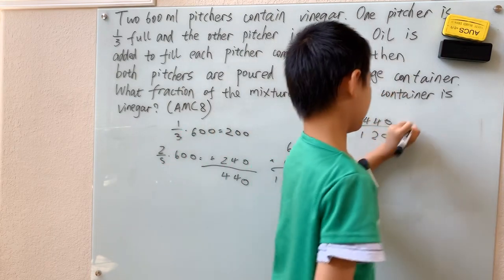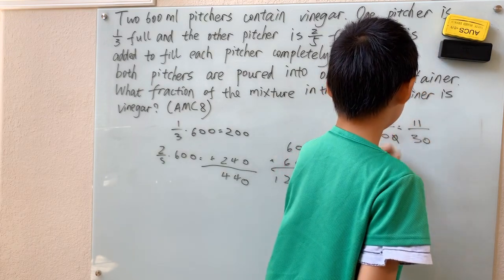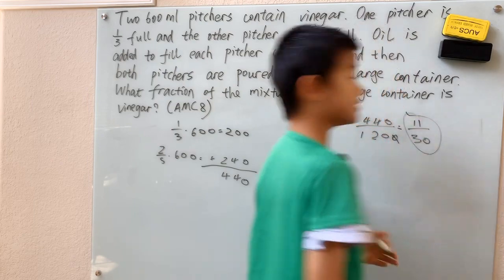A factor of 4, 11 over 30 as our answer.